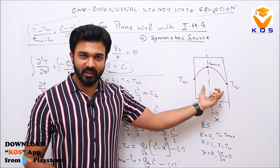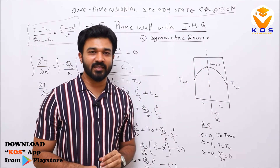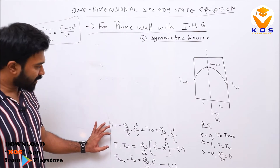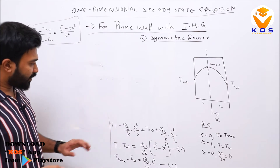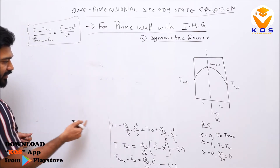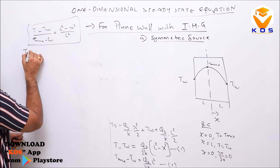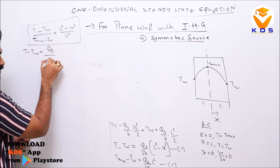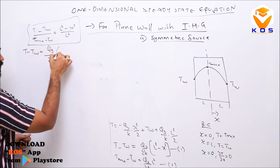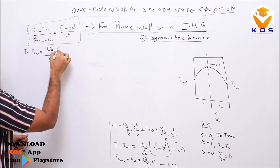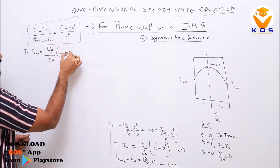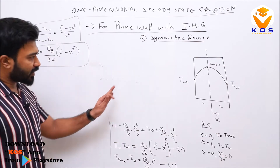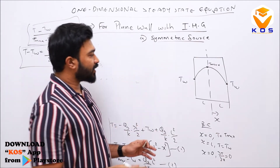Now we consider the asymmetric source case. Before going to that, the key equation T − T_w = qg/(2k) · (L² − x²) is very important and will be used as the basis for the asymmetric source derivation.